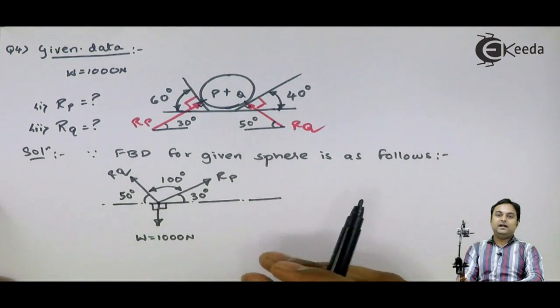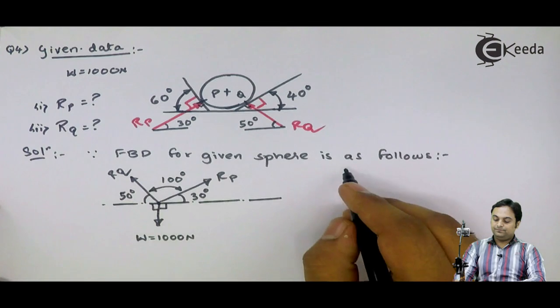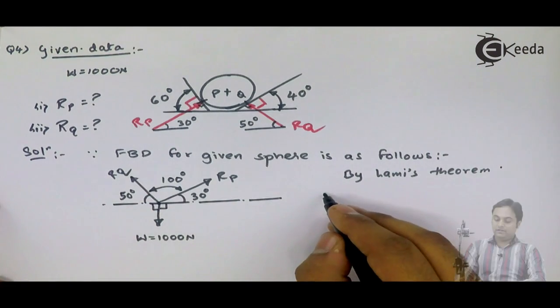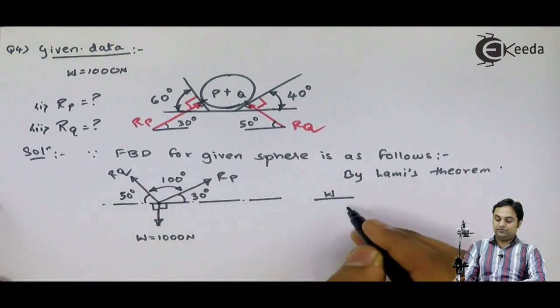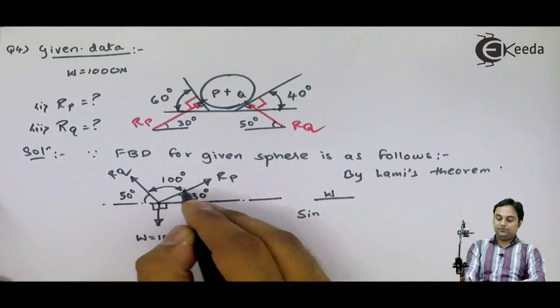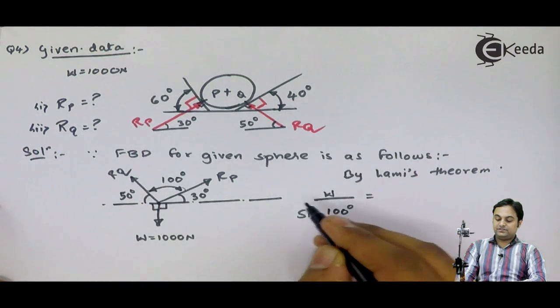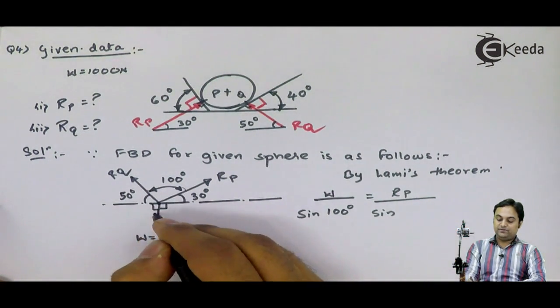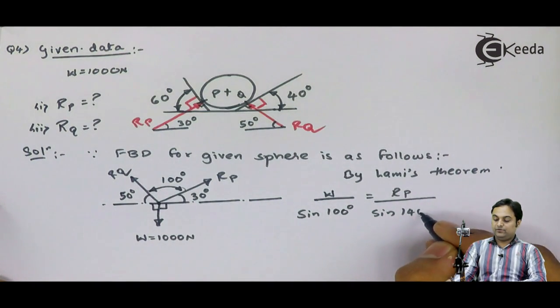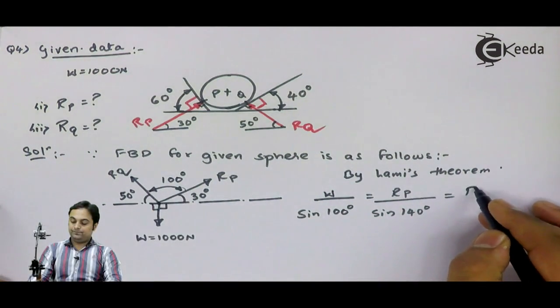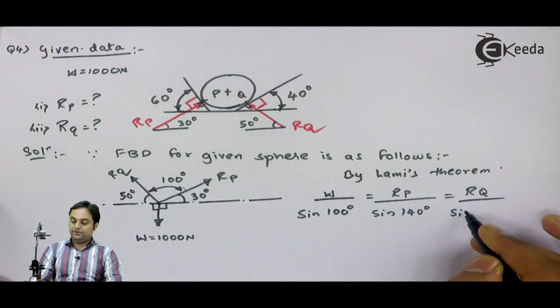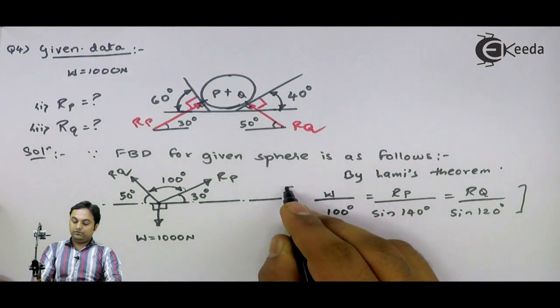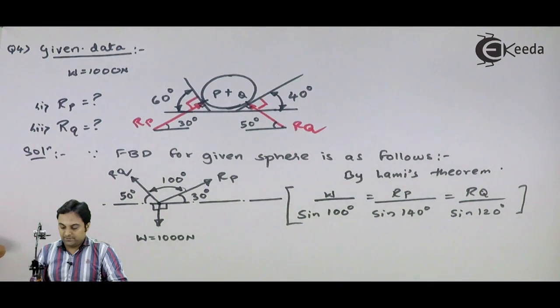By Lami's theorem, I'll take W upon sine of angle between RP and RQ, that is 100 degrees. If I take RP, reaction at P, then I have to take angle between RQ and W, which is 50 plus 90, that gives me 140 degrees. If I take RQ, angle between RP and W is 90 plus 30, which is 120 degrees.